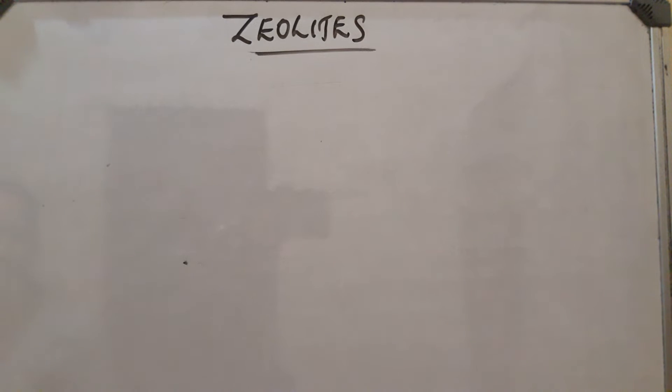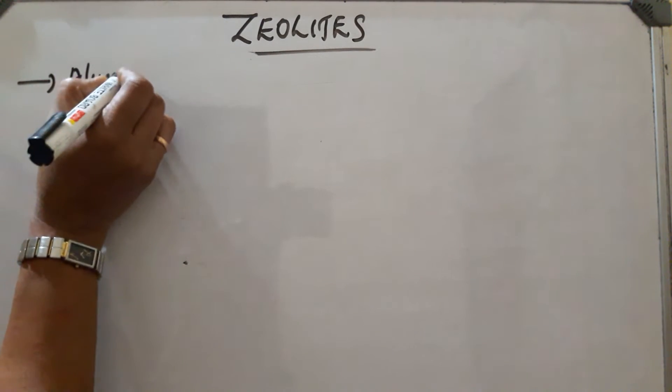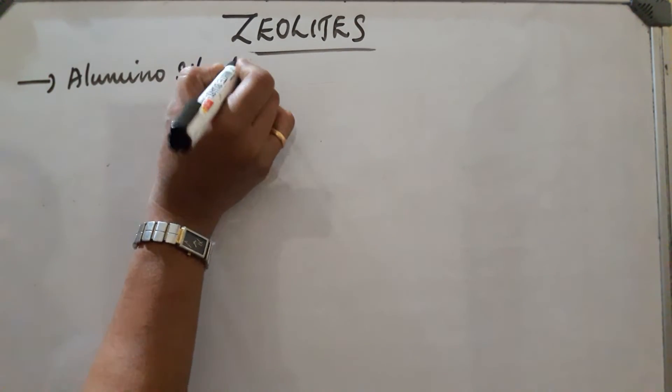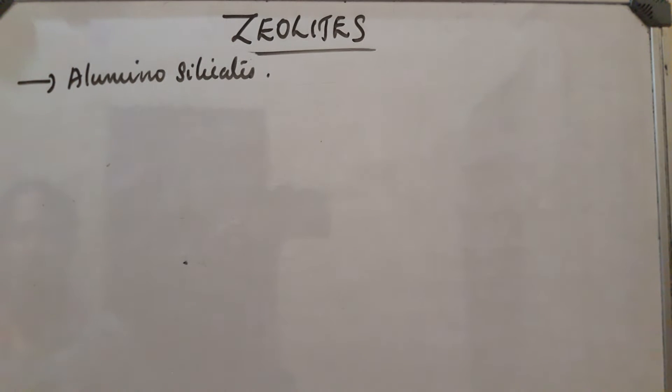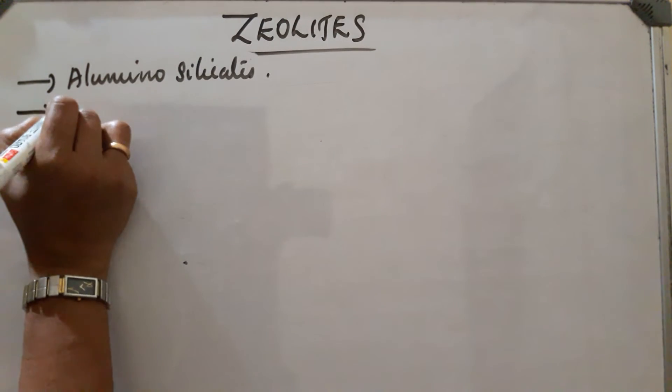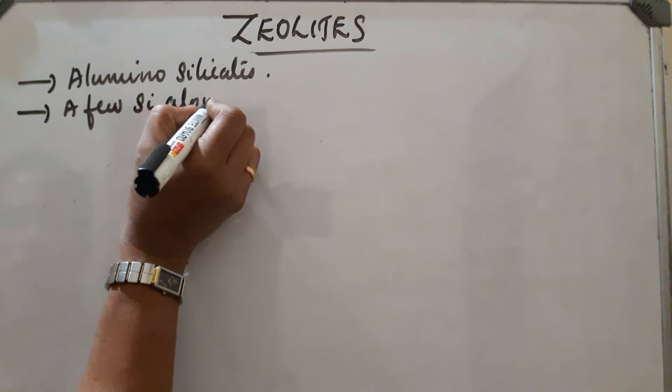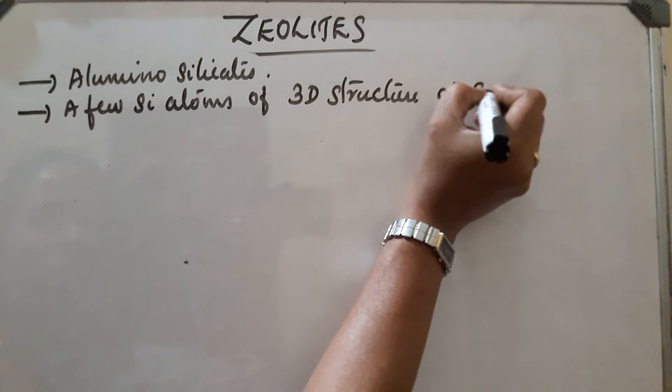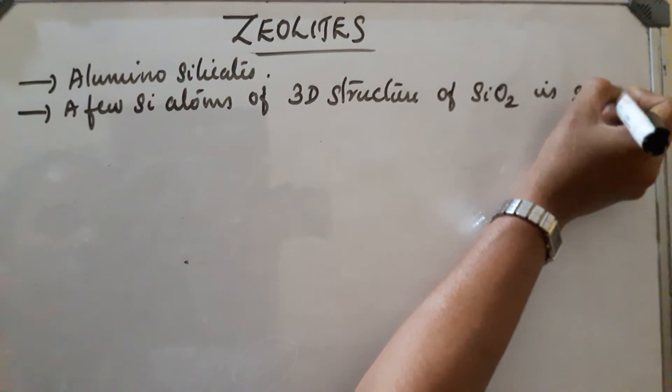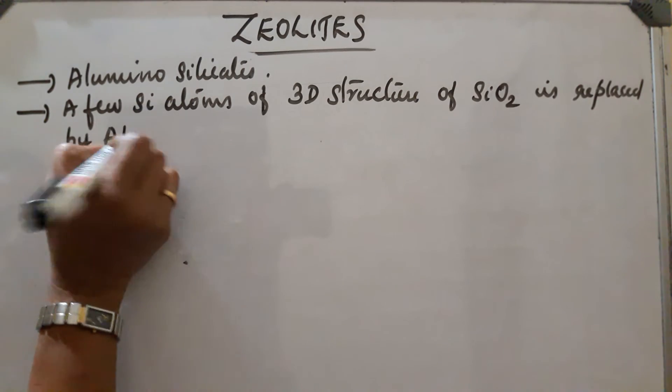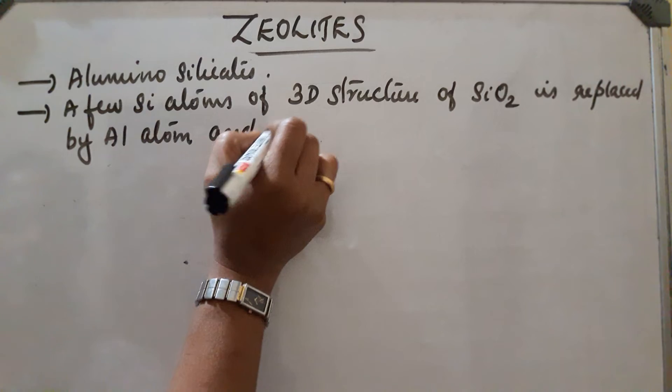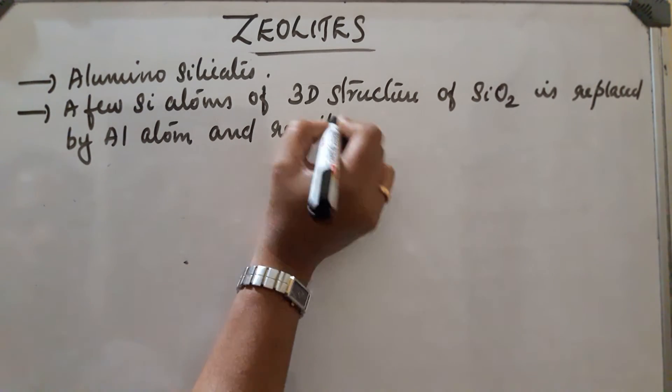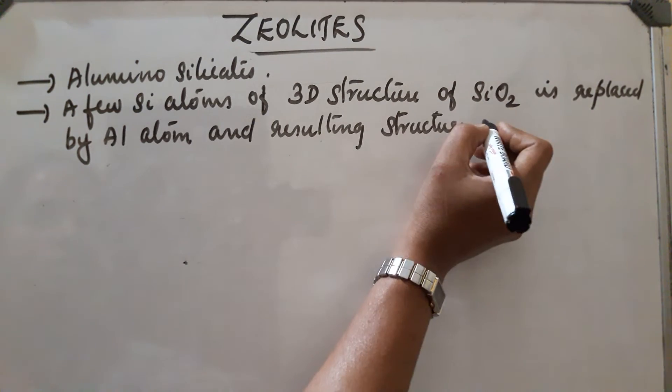Zeolites. Zeolites are aluminosilicates. In this structure, a few Si atoms of 3-dimensional network of SiO2 is replaced by aluminum atom and the resulting structure will be the aluminosilicate. Few Si atoms of 3D structure of silicon dioxide is replaced by aluminum atom and resulting structure is aluminosilicates or zeolites.